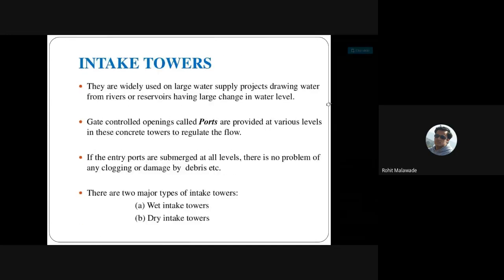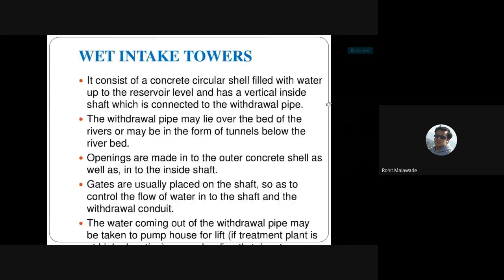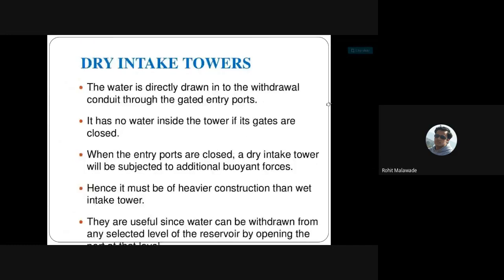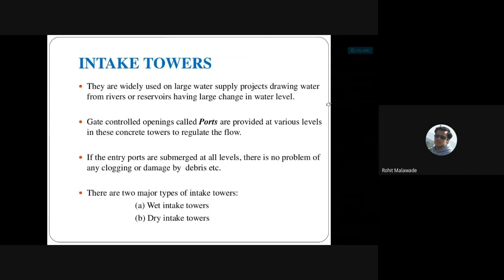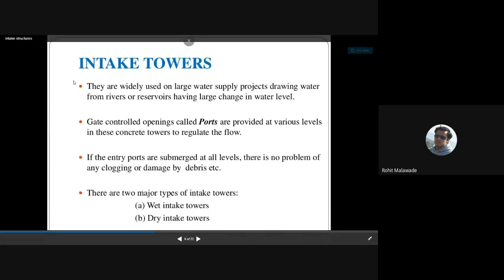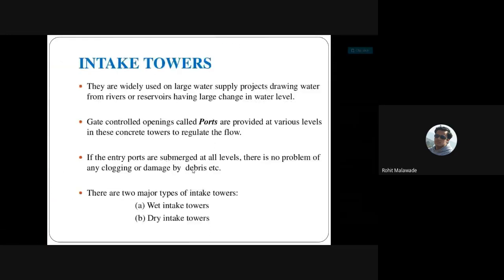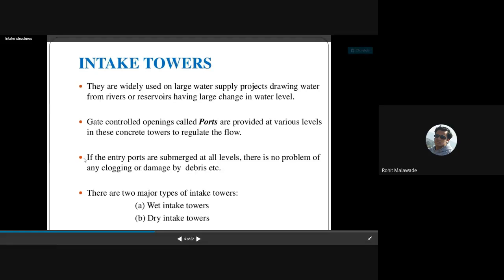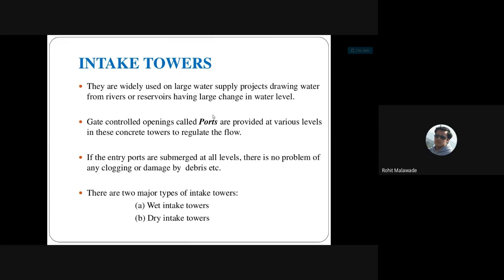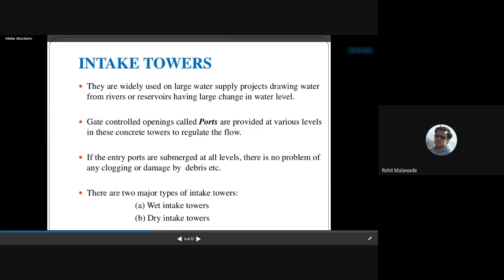Intake towers are widely used in large water supply projects to draw water from rivers and reservoirs. For a small water supply, a submerged intake is used; for large water supply schemes, intake towers are used. They have gate-controlled openings called ports provided at various levels in the concrete towers to regulate flow. If the entry ports are submerged at all levels, there is no problem of clogging or damage by debris.